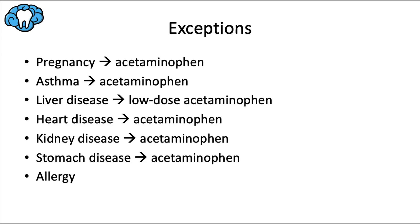NSAIDs are the first-line therapy for acute dental pain, but there are several exceptions. For pregnant women, acetaminophen is generally the safest option; NSAIDs are okay in the first and second trimesters but not in the third, and most opioids are contraindicated throughout pregnancy. For asthmatic patients, acetaminophen is again safest, as NSAIDs can induce bronchospasm and opioids cause respiratory depression. For patients with chronic liver disease or cirrhosis, both NSAIDs and acetaminophen can be toxic to the liver, so the best option is low-dose acetaminophen not exceeding two grams per day.